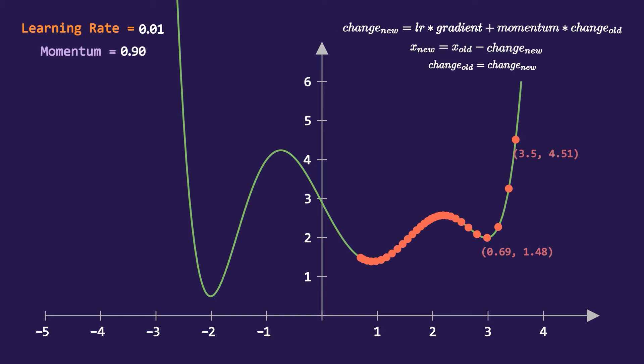After doing many trial and error I found the correct value of learning rate with momentum equals 0.9 that was able to search the global minimum. It was 0.0782 and we have found the global minimum with the help of momentum.